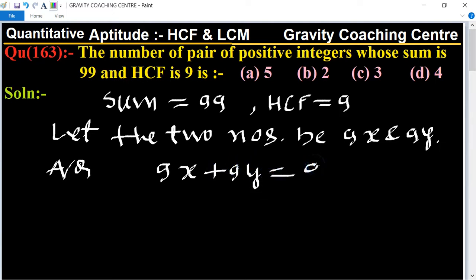So now we take 9 as a common factor. 9 times x plus y equals 99. Cancel by 9 to get 11. So x plus y equals 11.